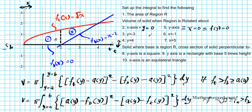Now let's address question number 5. This function will be our axis of rotation. We also need to identify our limits of integration — we're going from zero to two. We need to determine our top and bottom functions. In the y-direction, this function becomes the bottom function. We have f of x equals root x, so y equals root x. Solving for x gives x equals y squared, so the bottom function is y squared.